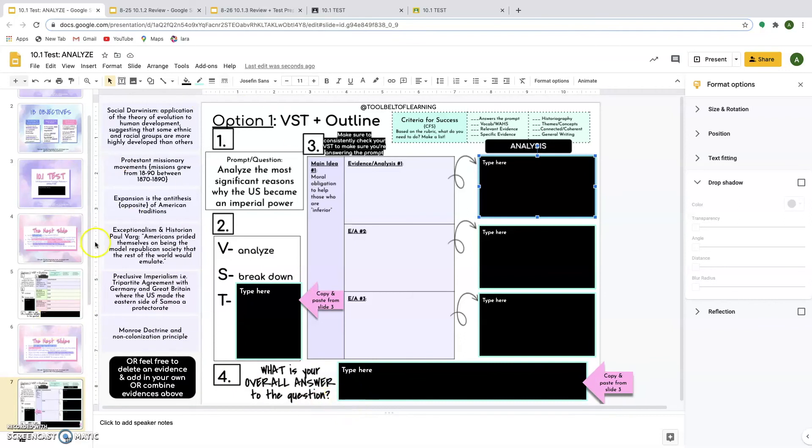Also, I added in a distractor to each of the evidences of something that was actually the opposite of what they were looking for, as a way to really help them discern the importance of evidence selection.